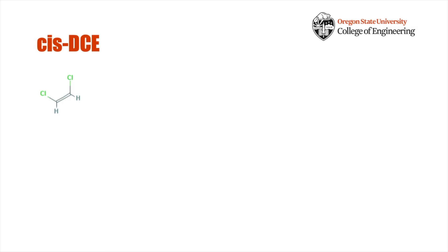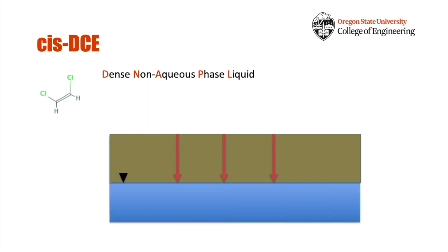Like many other CAHs, CIS-DCE is a dense non-aqueous phase liquid. This means that when disposed of improperly or spilled, CIS-DCE would actually percolate down through the soil and reach the groundwater. And since it's somewhat water-soluble, we now have a contamination problem in the groundwater.